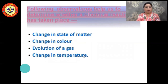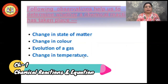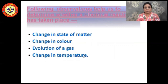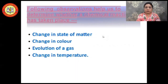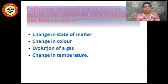So how do we know whether a chemical reaction has taken place or not? These are some observations one can make during a chemical reaction: there may be a change in the state of matter — from solid to liquid, or liquid to gas. There can be a change in the color of the substance, evolution of gas can take place, and there can also be a change in temperature.